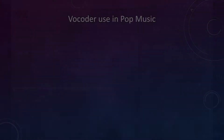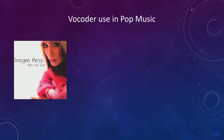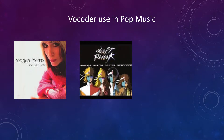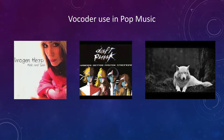You may have heard the effects of a vocoder in pop music. For example: Imogen Heap's "Hide and Seek," Daft Punk's "Harder, Better, Faster, Stronger," and Brad Murphy's "Fox Country Soul." There are links to these songs so you can listen.